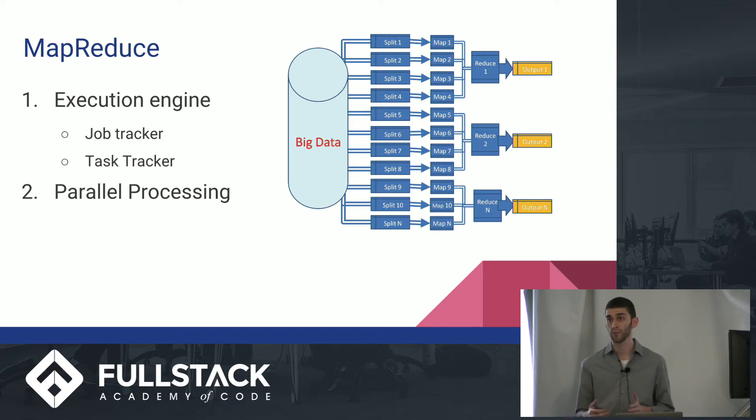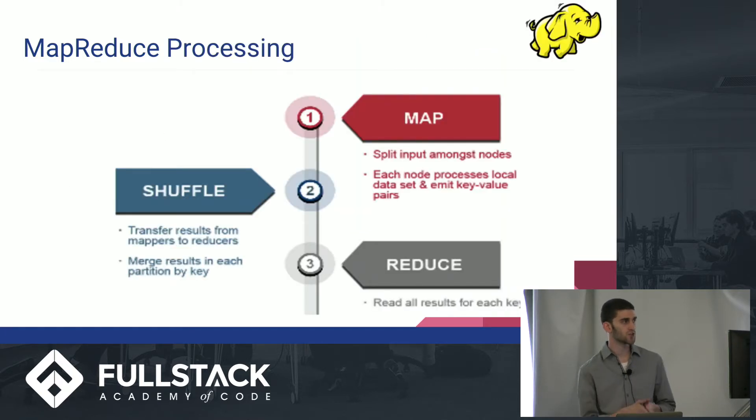Now, the second part of this MapReduce is the parallel processing, right? How do we do all this at the same time? And again, this is a lot easier to show than to explain. So I'll go through another fairly simple example. So there's three parts to this MapReduce processing, which is Map, which is splitting the tasks among the different nodes.